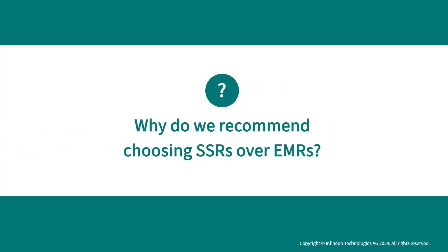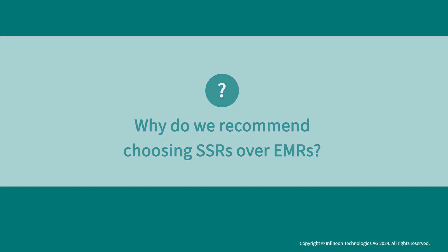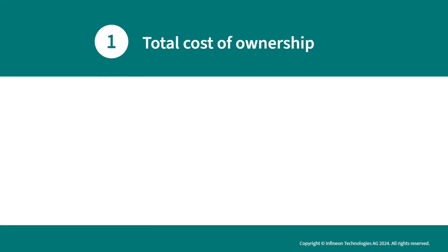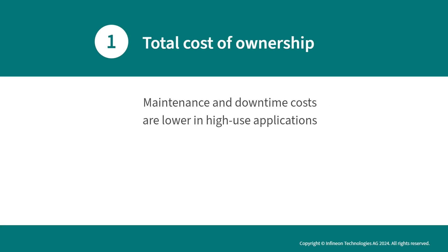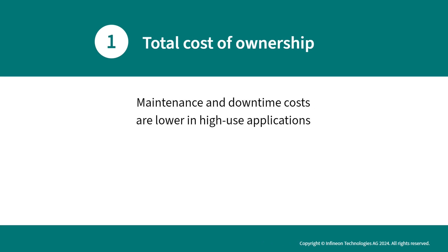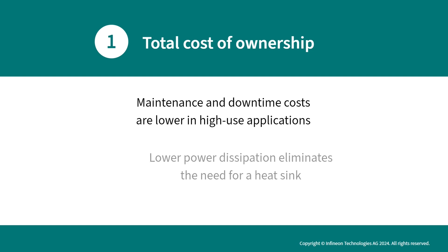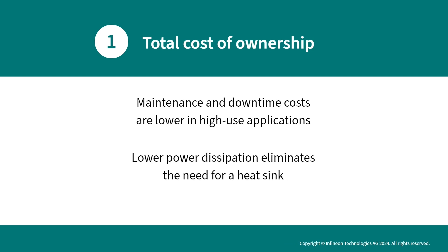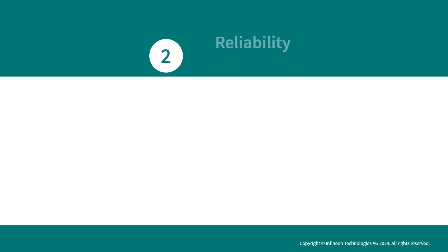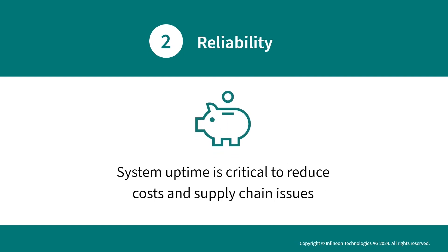Why do we recommend choosing SSRs over EMRs? We have four main reasons. First, for the total cost of ownership, in high-use applications maintenance and downtime costs are lower, and lower power dissipation leads to the elimination of the heat sink, resulting in a smaller footprint. Second, regarding reliability, system uptime is critical to reduce costs as well as supply chain issues.